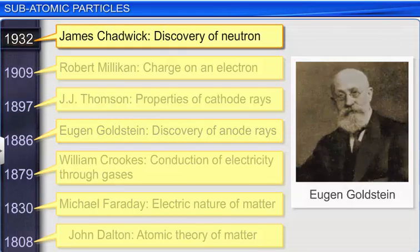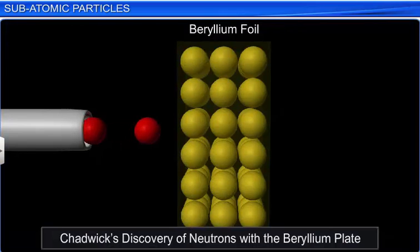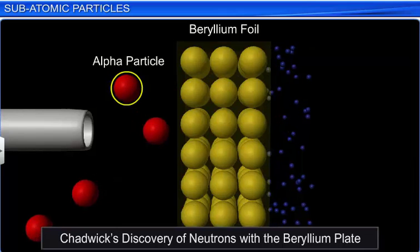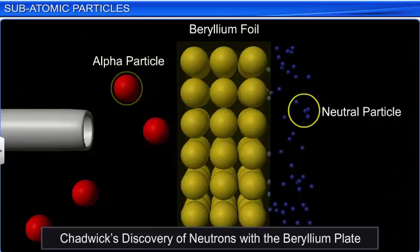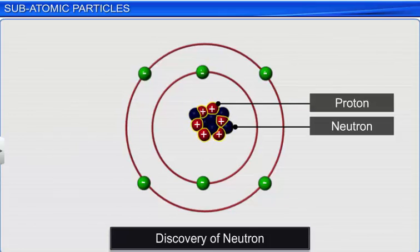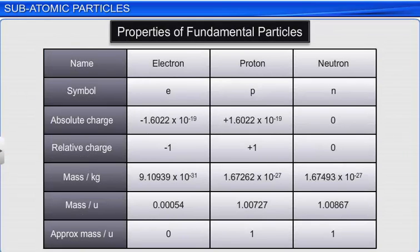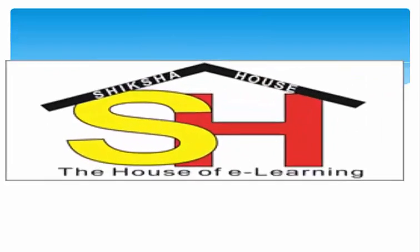Later in 1932, James Chadwick proved the presence of these heavy neutral particles through a series of scattering experiments. In one experiment, by bombarding a beryllium plate with alpha particles, Chadwick observed the emission of a neutral particle whose mass was equivalent to that of a proton. He named this particle the neutron. After all subatomic particles were discovered, it was concluded that an atom is made up of protons (positively charged particles), electrons (negatively charged particles), and neutrons (neutral particles). The table here summarizes the properties of these fundamental particles.